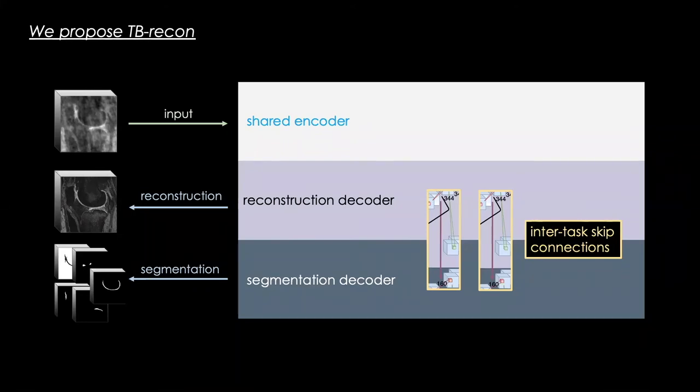TP Recon has a novel architecture comprising a shared encoder and two task-related encoders, which exchange features through inter-task skip connections.